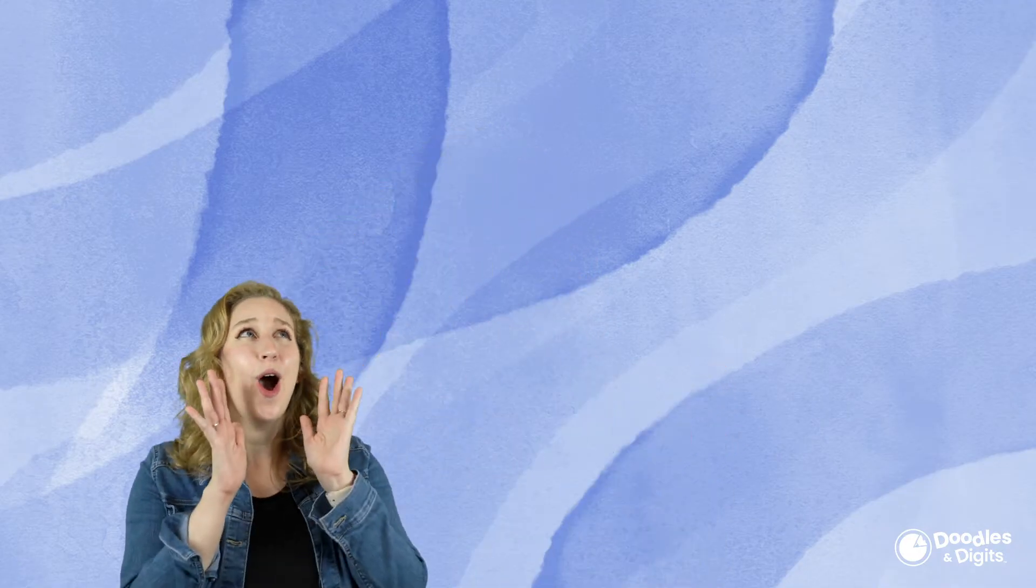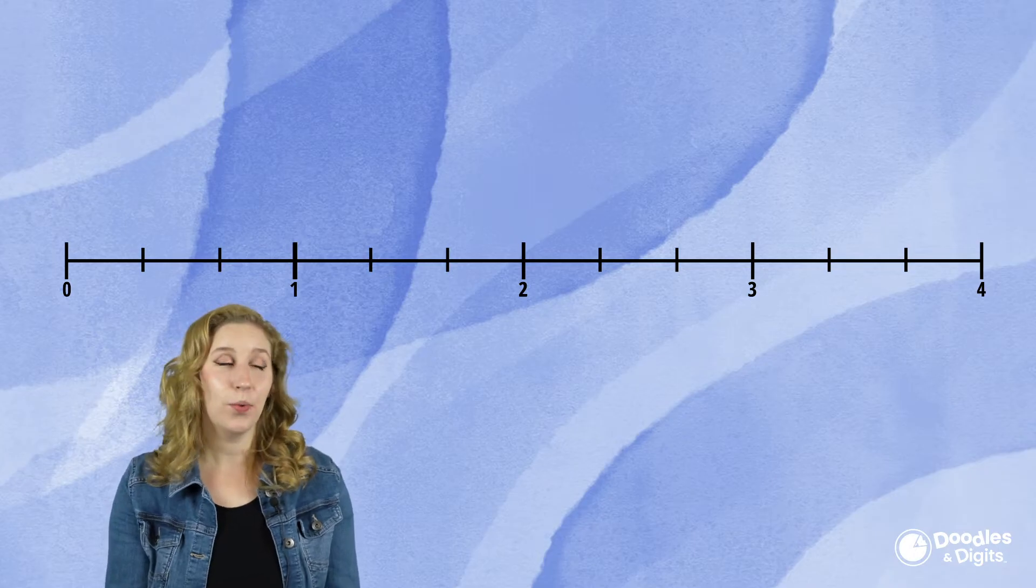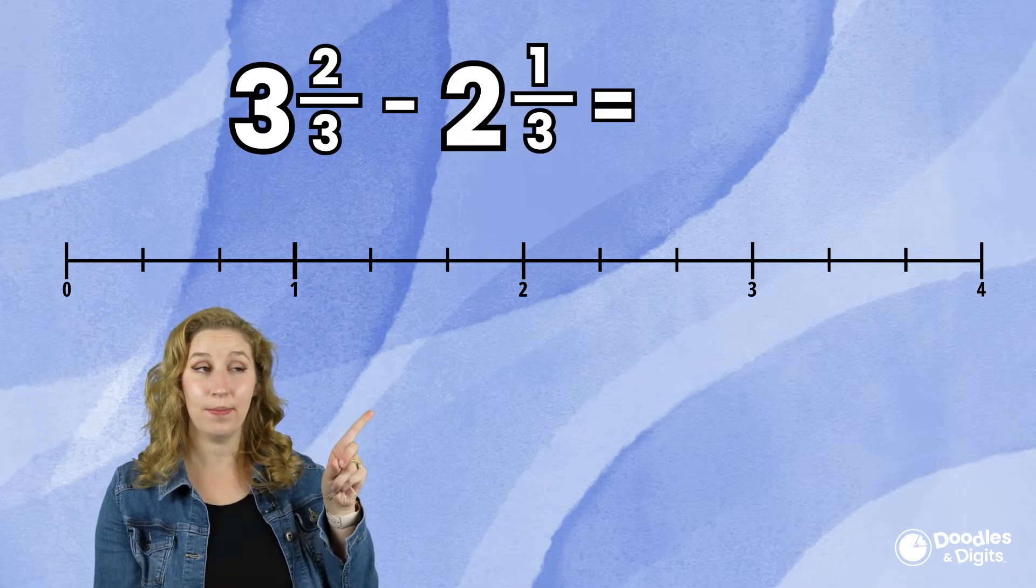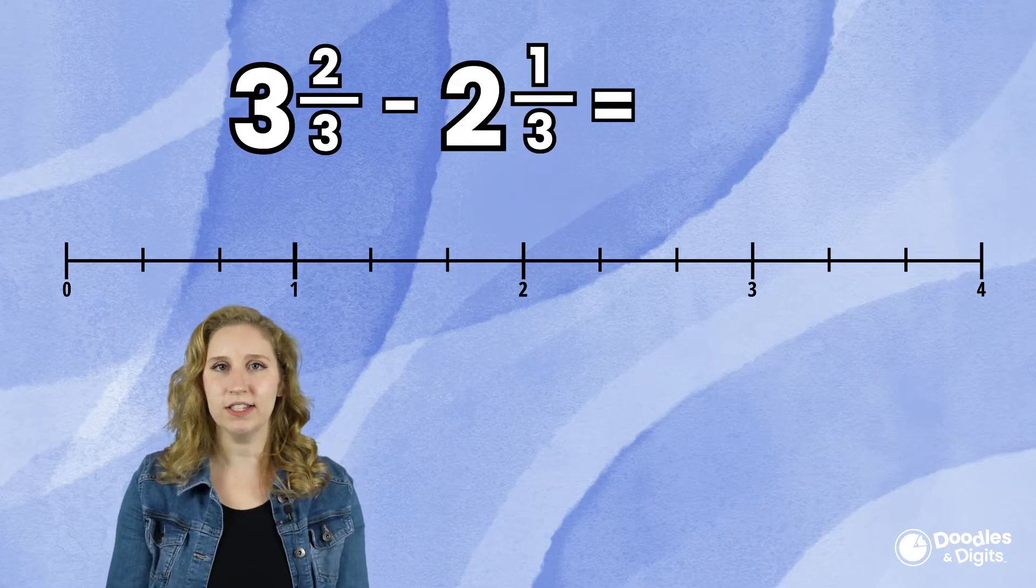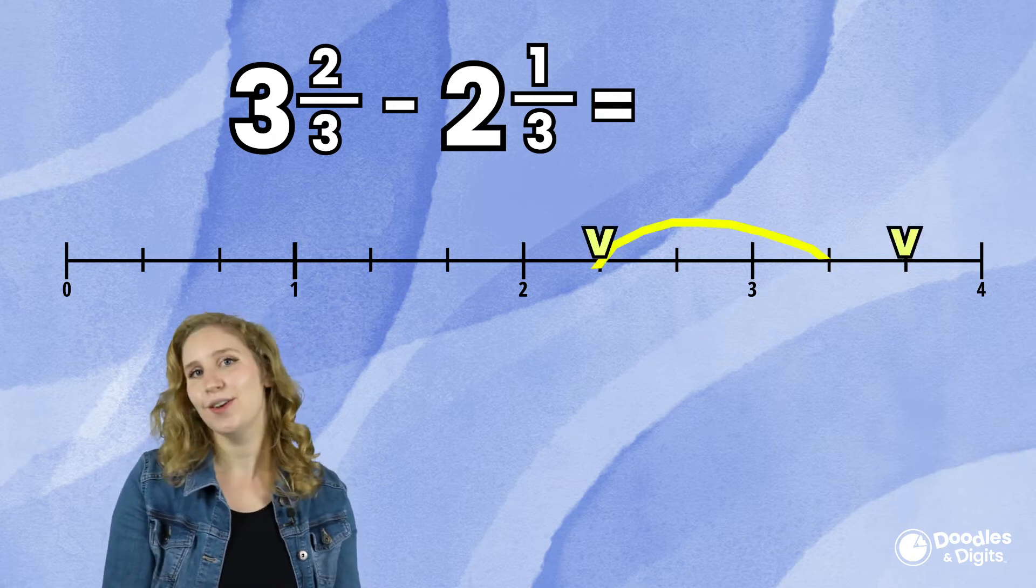You can subtract mixed numbers on a number line. Let's look at this number line right here. We're going to first subtract this problem. I'm going to subtract first, and I want you to see what's going on with the number line. What do you notice? What do you wonder?